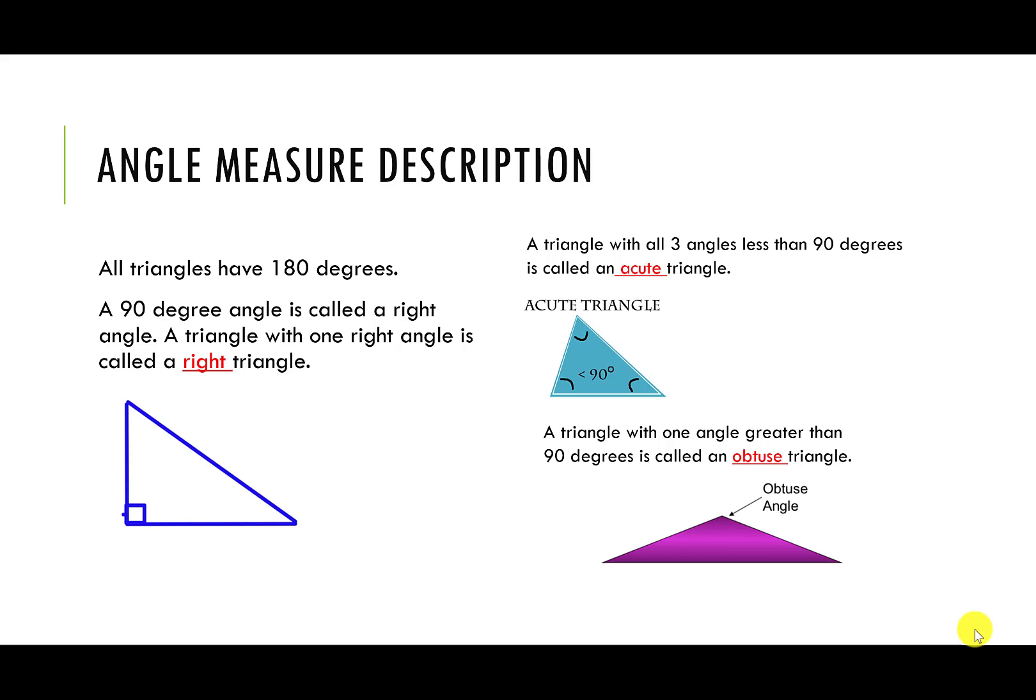We usually indicate it by putting a little square or box in one side. It won't always happen though, so sometimes look for the words to indicate that it's a right triangle if you don't see the box. A triangle with all three angles less than 90 degrees will be called acute, and a triangle with one angle greater than 90 degrees is called obtuse.